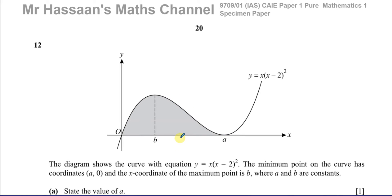Here we have a diagram showing the curve with equation y equals x times (x minus 2) squared. The minimum point on the curve has x-coordinate A, and the x-coordinate of the maximum point is B, where A and B are constants. We've got to first of all state the value of A.